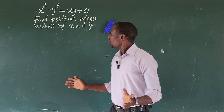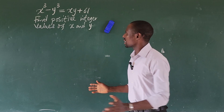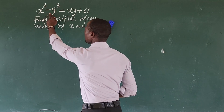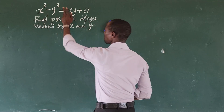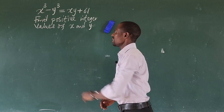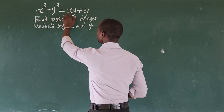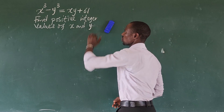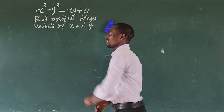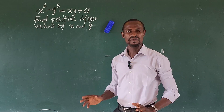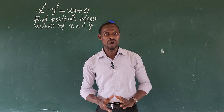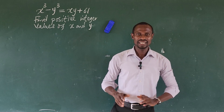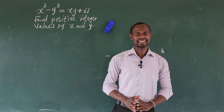The question reads: x to the power of 3 minus y to the power of 3 equals xy plus 61. We are asked to find the positive integer values of x and y that will satisfy this equation.